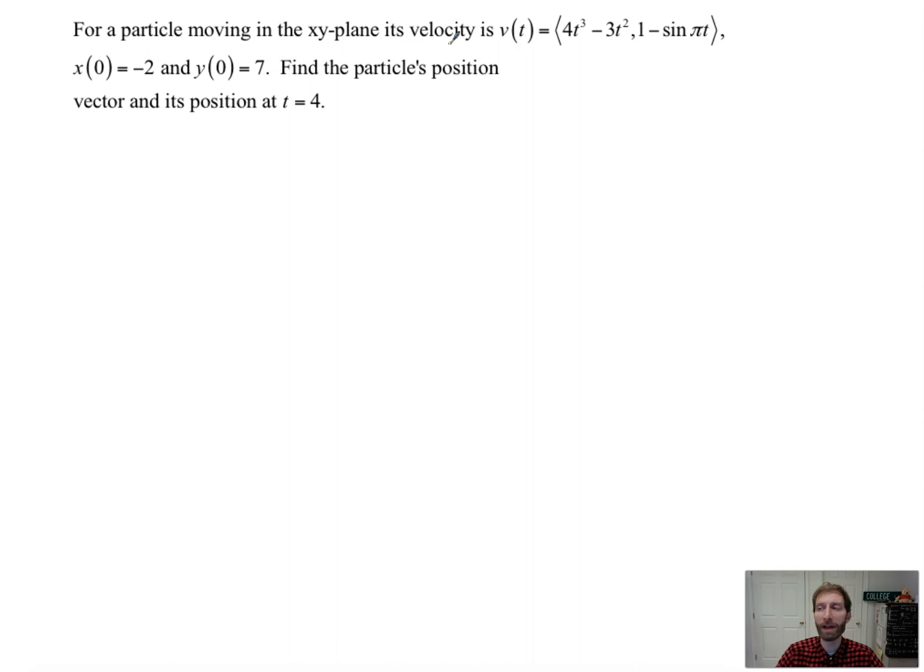So for a particle moving in the xy-plane, its velocity is v of t equals that right there. x of 0 is negative 2. y of 0 is 7. Find the particle's position vector and its position at t equals 4. Whoa. So that's a lot of stuff right there. Not only do we want the position at t equals 4, but we actually want the vector itself. This is a little bit different. Normally, I would use the fundamental theorem of calculus to figure out x of 4 and y of 4. But because we're asked specifically for the position vector, and then its position at t equals 4, I'm going to find just overall the position vector.